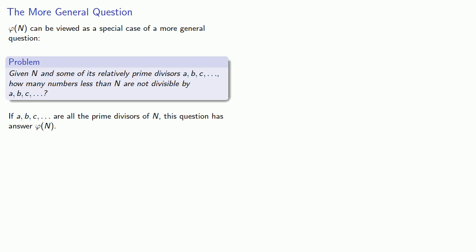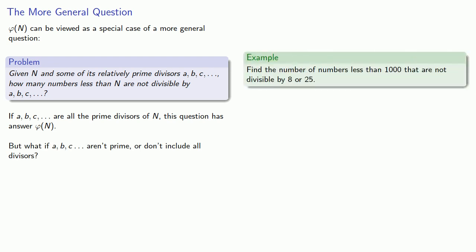But what if a, b, c, and so on aren't prime or don't include all divisors? For example, suppose we want to find the number of numbers less than 1000 that are not divisible by 8 or 25. This more general problem is actually easier to solve.